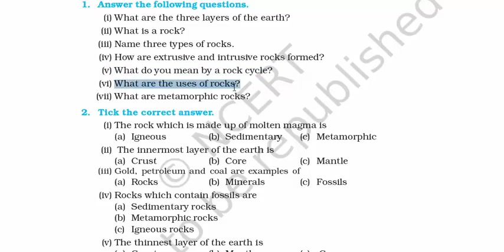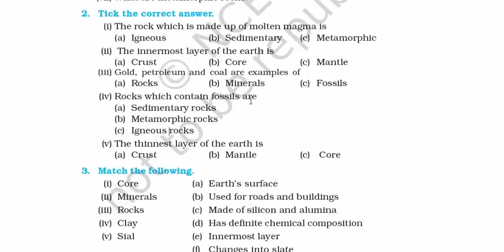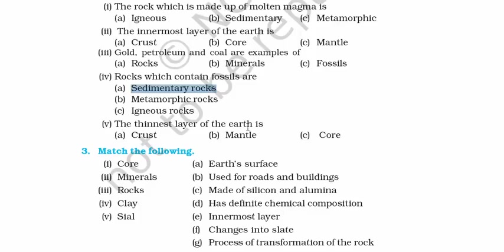Sixth: What are the uses of rocks? Rocks are used to build roadways, buildings, and many other things. Seventh: What are metamorphic rocks? Metamorphic rocks are the transformation of sedimentary and igneous rocks under high heat and pressure. Now for some quick answers: The rock made from molten magma is igneous rock — remember the volcano example, it's basically granite. The innermost layer of the earth is the core. Gold, petroleum, and coal are examples of minerals. Rocks that contain fossils are sedimentary rocks, made of compressed sand with fossils in between the layers. The thinnest layer of the earth is the crust at 35 kilometers; the mantle is 2,900 kilometers and the core is 3,500 kilometers.